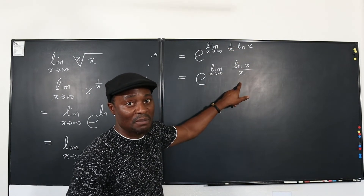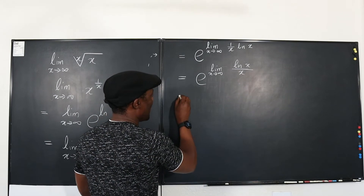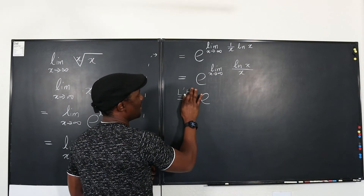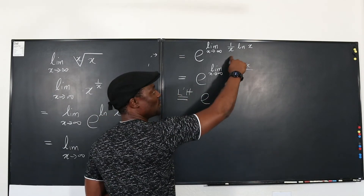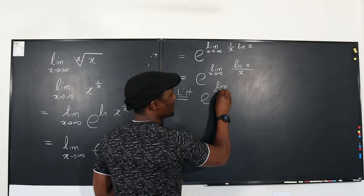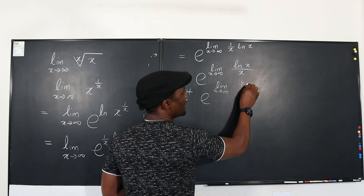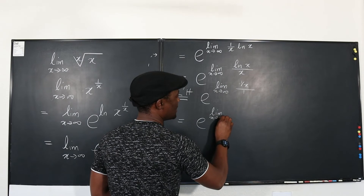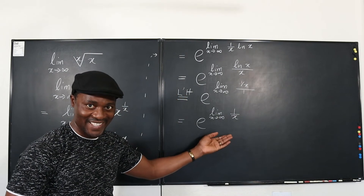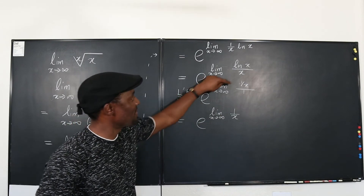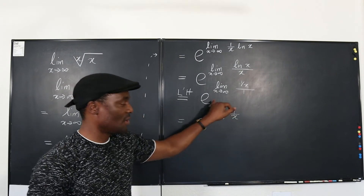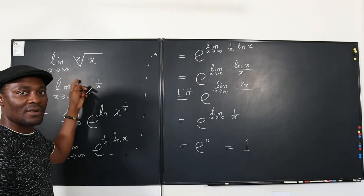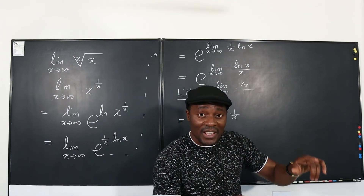Take the derivative of the top and the derivative of the bottom. Applying L'Hôpital's rule, this is going to be E to the limit as X goes to infinity: if you differentiate the top, you get one over X; if you differentiate the bottom, you get one. So this is E to the limit as X goes to infinity of one over X. As X goes to infinity, this expression goes to zero. So this is E to the zero, which equals one — just as we predicted based on that trial and error we did before.